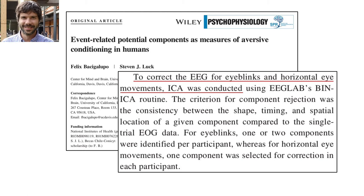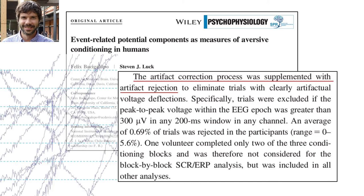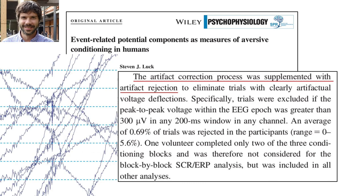Felix used ICA to correct for blinks and eye movements in his aversive conditioning study. He also used artifact rejection to get rid of any large miscellaneous artifacts like EMG bursts and movement artifacts. But only a small percentage of trials were rejected.